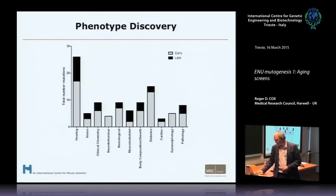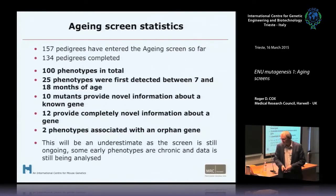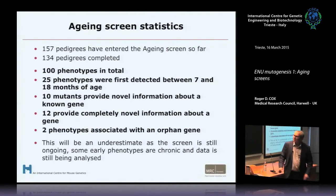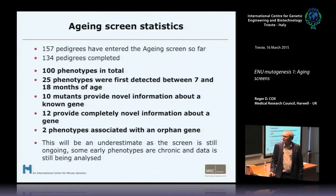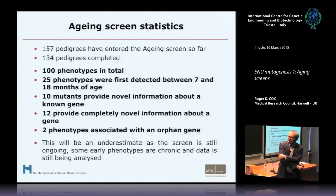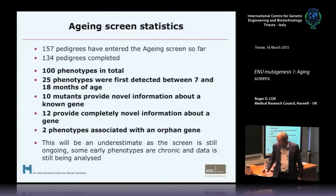In running statistics: 157 pedigrees have gone into the aging screen so far, 134 at completion. It takes 18 months to complete. There are 100 phenotypes in total, and 25 identified between seven and 18 months of age — a significant number. Ten mutants provide novel information about a known gene; 12 provide completely novel information about a gene. Two phenotypes are associated with a gene that previously had no known function, and the screen is still ongoing.